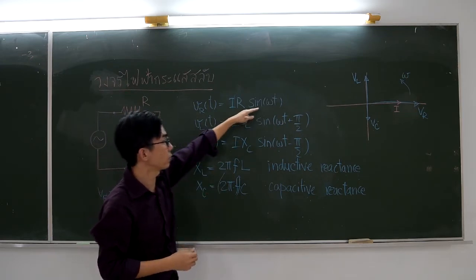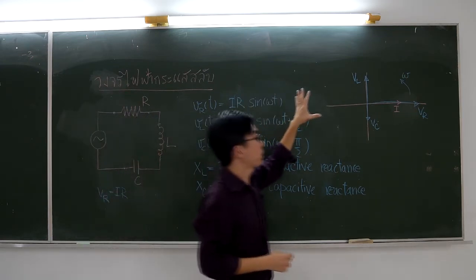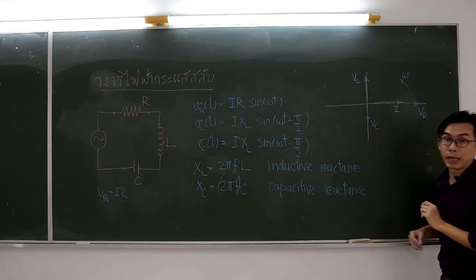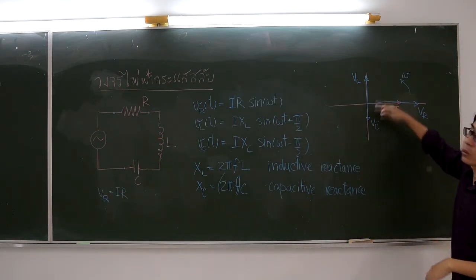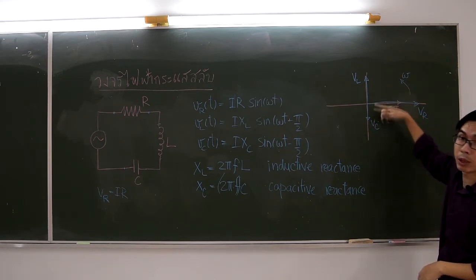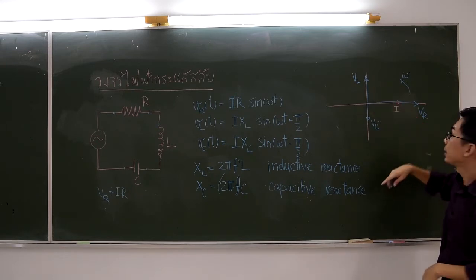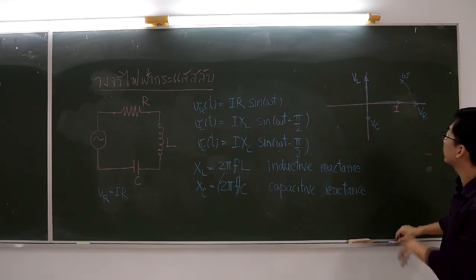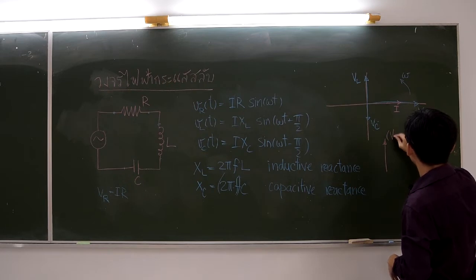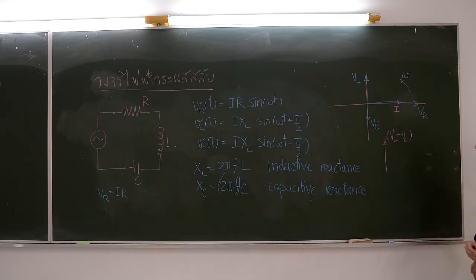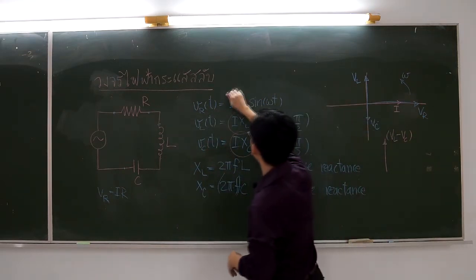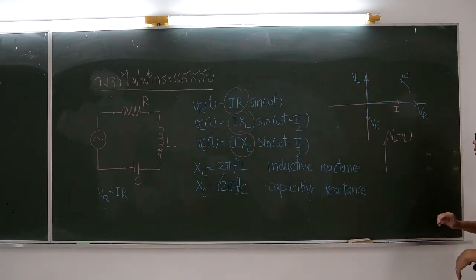To combine the voltage across the whole branch, first, suppose VL is larger than VC. Then, VL minus VC is represented by this vector. Here I forgot to tell you that VL is IXL, VC is IXC, and VR is IR.